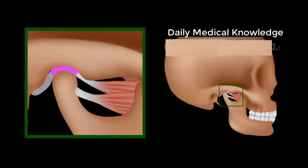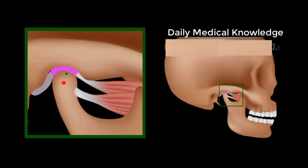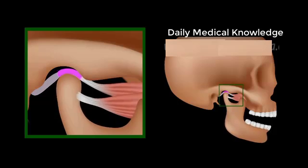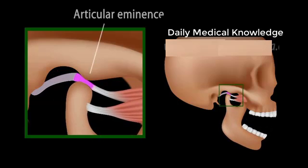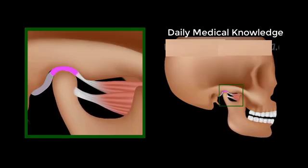The mandible is the only bone that moves when the mouth opens. The first 20 mm of opening involves only a rotational movement of the condyle within the socket. For the mouth to open wider, the condyle and the disc have to move out of the socket, forward and down the articular eminence, a convex bone surface located anteriorly to the socket. This movement is called translation.